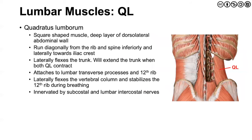The QL extends from the 12th rib and lumbar transverse processes down to the top of the iliac crest. It's more square-shaped, and it serves to laterally flex the trunk. If it functions bilaterally, it will extend the trunk — so if both sides are contracting, we get lumbar extension. The innervation here is the subcostal and lumbar intercostal nerves. This is a really important muscle from a stabilization standpoint.